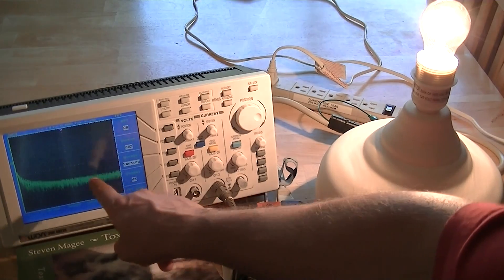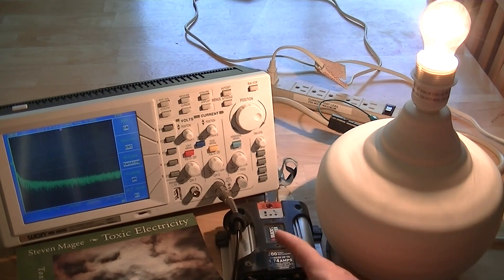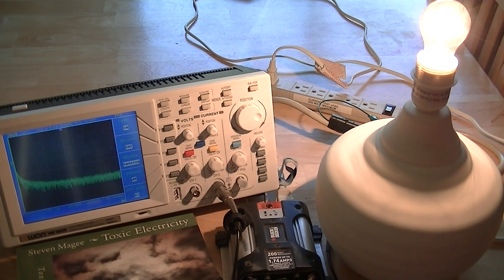So you can see by running a conventional light bulb on a modified sine wave inverter you'll actually get a tremendous amount of harmonics on your electrical system. And harmonics is also known by its other name which is dirty electricity.